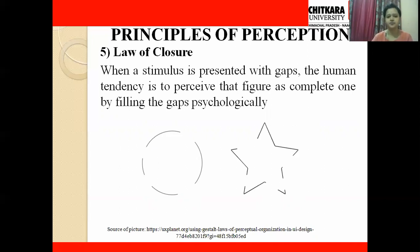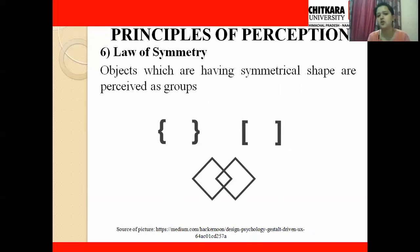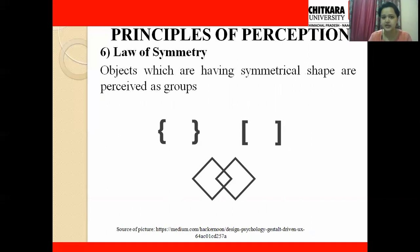The next law is the law of symmetry. Objects that have a symmetrical shape are perceived as a group. For example, different kinds of brackets shown in a slide — when we see those particular shapes, we perceive them as a group of brackets rather than taking each individually as a separate shape. That is the law of symmetry. This was all about the principles of perception.